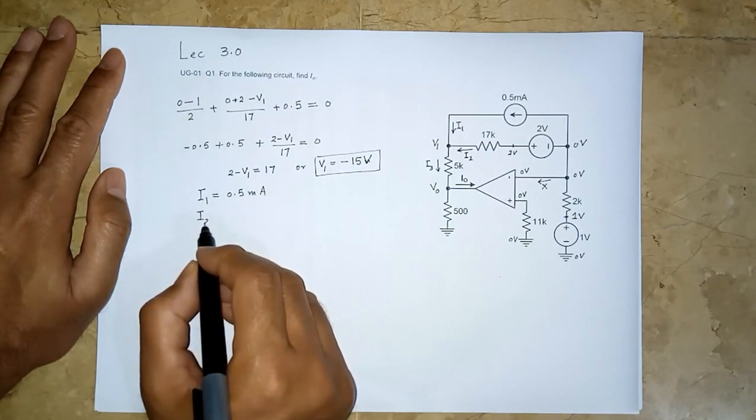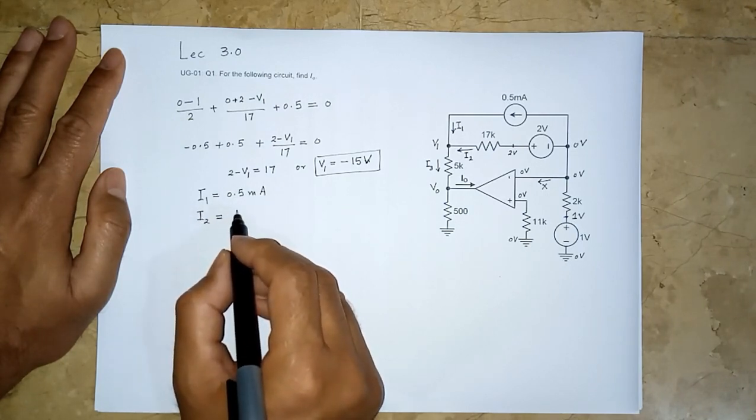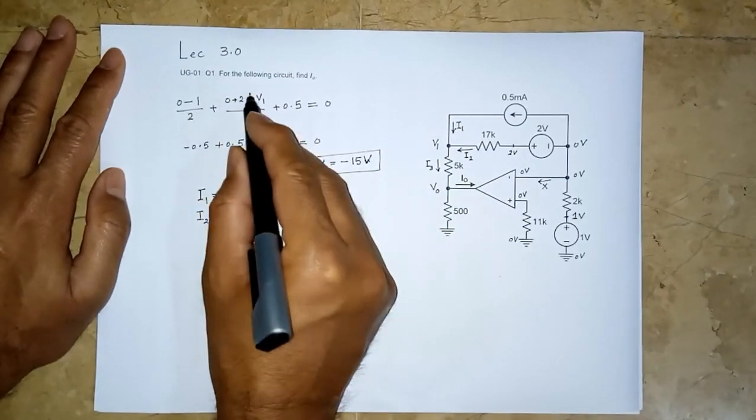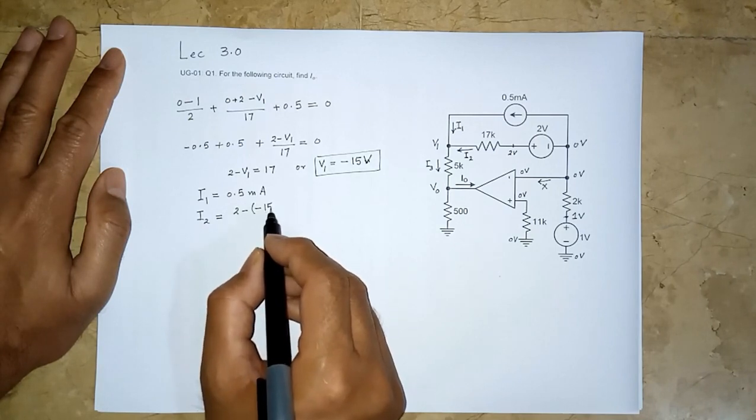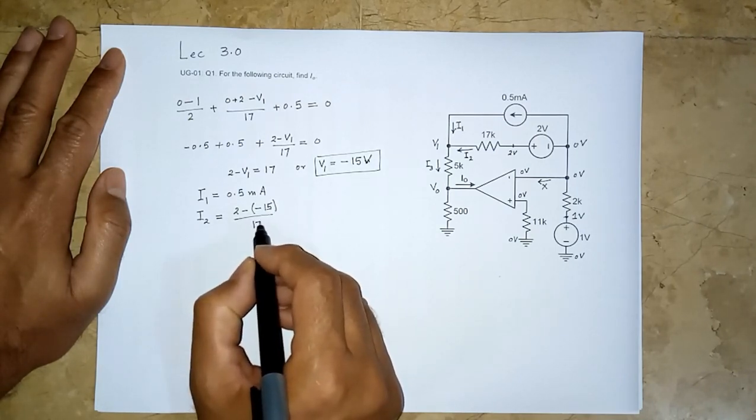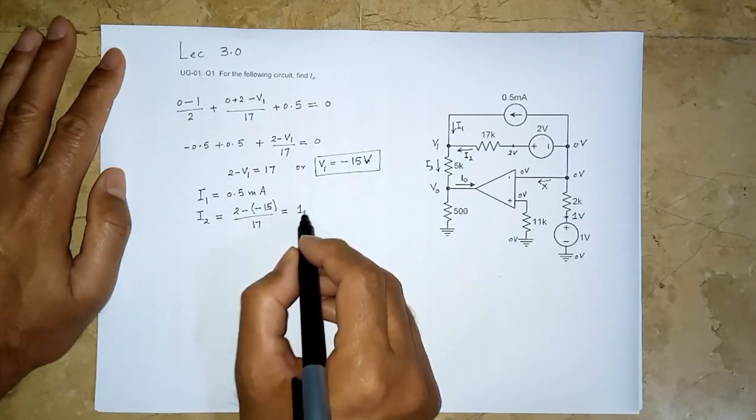i2 is—look at the direction—i2 is the same thing. This one: i2 is 2 minus minus 15 over 17, or 1 milliampere.